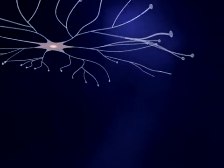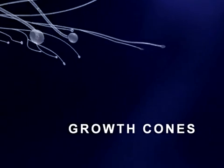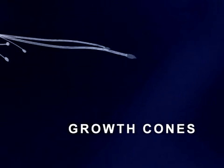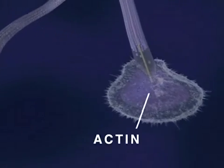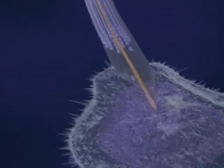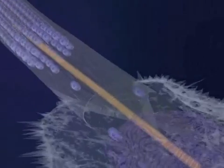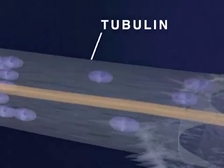At the end of each neurite is a growth cone where structural proteins are assembled to form the cell membrane. Two principal proteins involved in growth cone function are actin, which is responsible for the pulsating motion seen here, and tubulin, a major structural component of the neurite membrane.